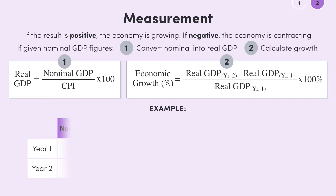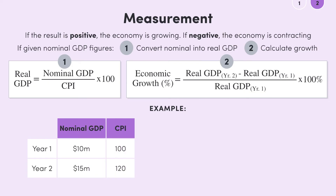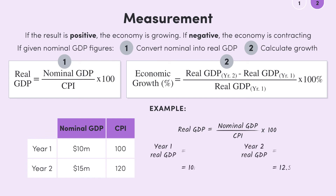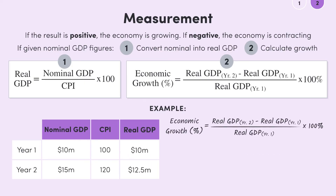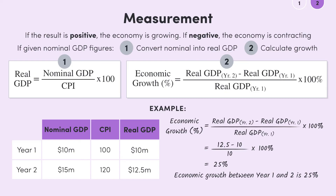Let's run through an example. Let's say that nominal GDP is equal to $10 million in year 1 and $15 million in year 2, and the CPI is 100 in year 1 and 120 in year 2. The first step is to find real GDP in each year by dividing nominal GDP by the CPI and multiplying by 100. Doing so, we find that real GDP is $10 million in year 1 and $12.5 million in year 2. We can now use these real figures: 12.5 million minus 10 million, divided by 10 million, times 100 — giving us 25%. So economic growth between year 1 and year 2 is equal to 25%.